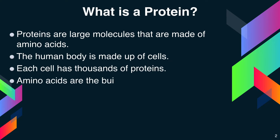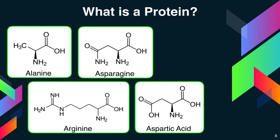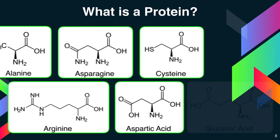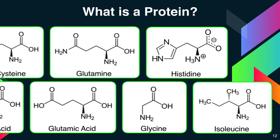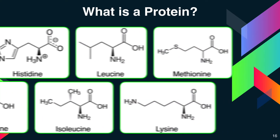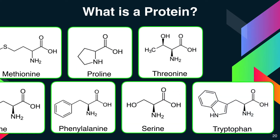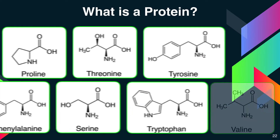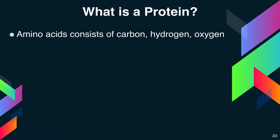Amino acids are the building blocks of proteins. The 20 amino acids are: alanine, arginine, asparagine, aspartic acid, cysteine, glutamic acid, glutamine, glycine, histidine, isoleucine, leucine, lysine, methionine, phenylalanine, proline, serine, threonine, tryptophan, tyrosine, and valine. Amino acids consist of carbon, hydrogen, oxygen, nitrogen, and sometimes sulfur.